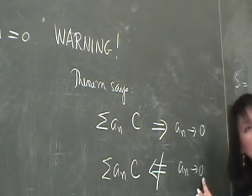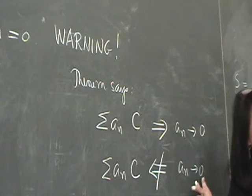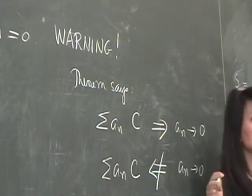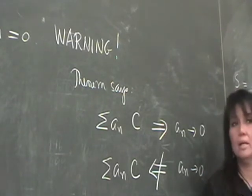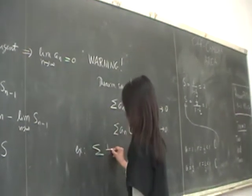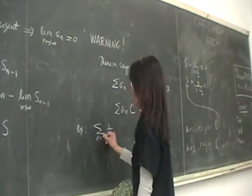But if you know that the nth term goes to 0, does that tell us anything? Actually, we've met an example like this where the nth term goes to 0 and the series actually does not converge. For example, you have the harmonic series, right?